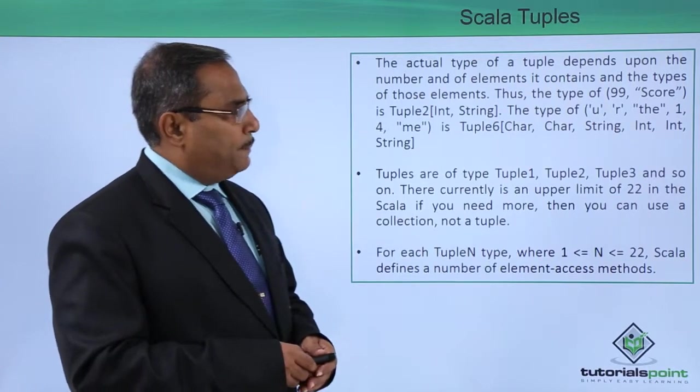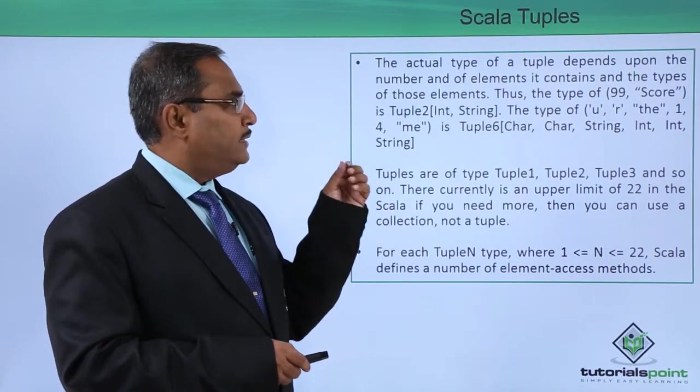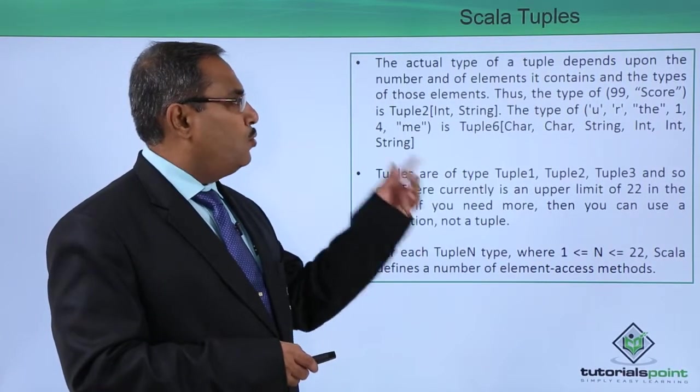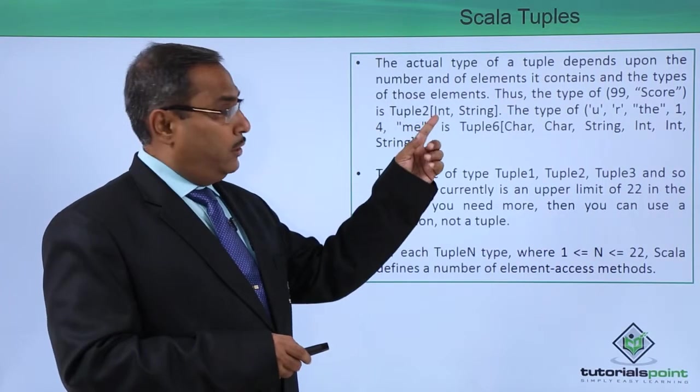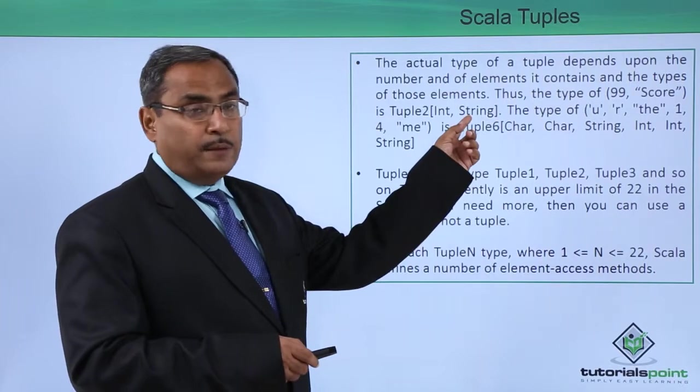The actual type of a tuple depends upon the number of elements it contains and the type of those elements. Thus the type of (99, "score") is Tuple2 because 99 is of type Int and "score" is of type String.